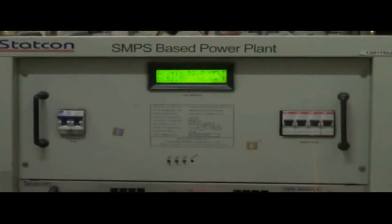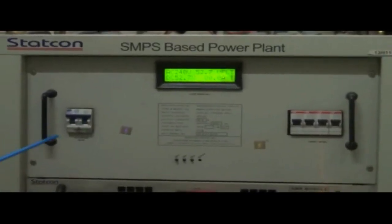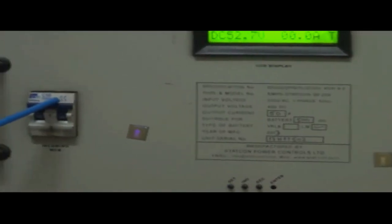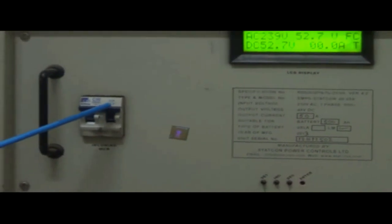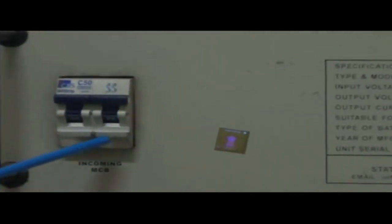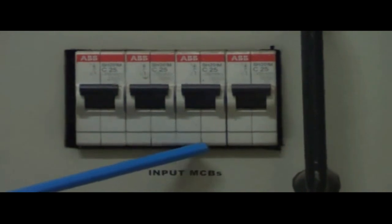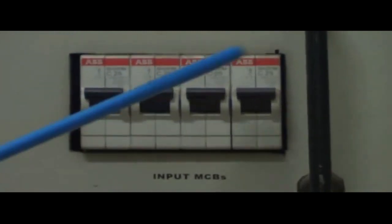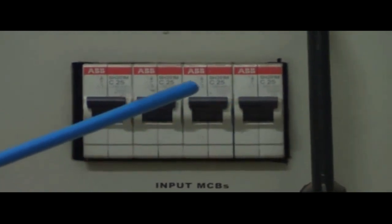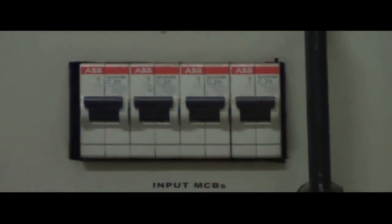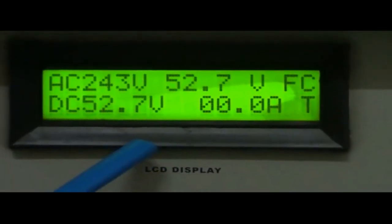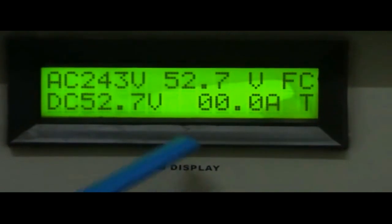Controls and indications: At the left hand side of front panel it has an incoming MCB used for switching on or off the AC input. At the right hand side of the front panel it has four input MCBs used for switching on or off the individual SMRs. At the middle top of the front panel there is a display system.